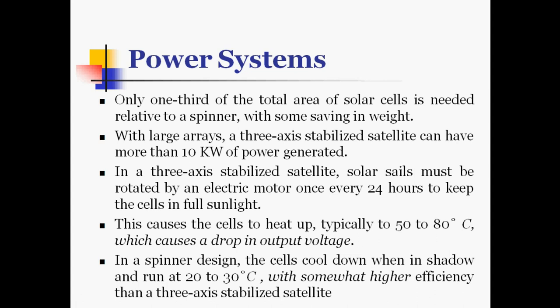With large arrays, a 3-axis stabilized satellite can have more than 10 kW of power generation. In a 3-axis stabilized satellite, solar cells must be rotated by an electric motor once every 24 hours to keep the cells in full sunlight. This causes the cells to heat up, typically to 50 to 80 degrees Celsius, which causes a drop in output voltage. In a spinner design, the cells cool down when in shadow and run at 20 to 30 degrees Celsius, with somewhat higher efficiency than a 3-axis stabilized satellite.